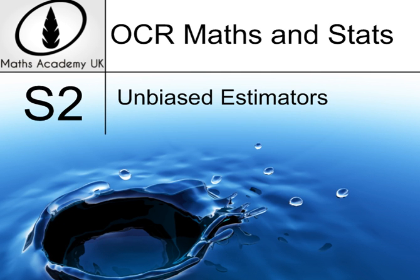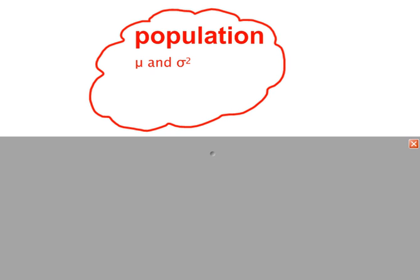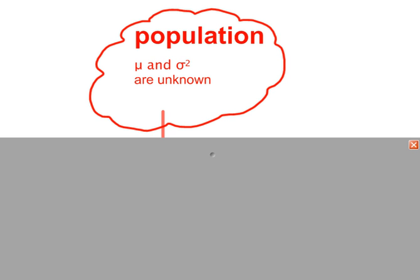Unbiased estimators. We have a population here and two of its parameters: the population mean and the population variance. To calculate these two values we need to use all of the data in the population, so if we carry out a census we can work out the exact values of the mean and variance. However, sometimes the mean and the variance for the population are unknown, so we need to estimate their values using a random sample.